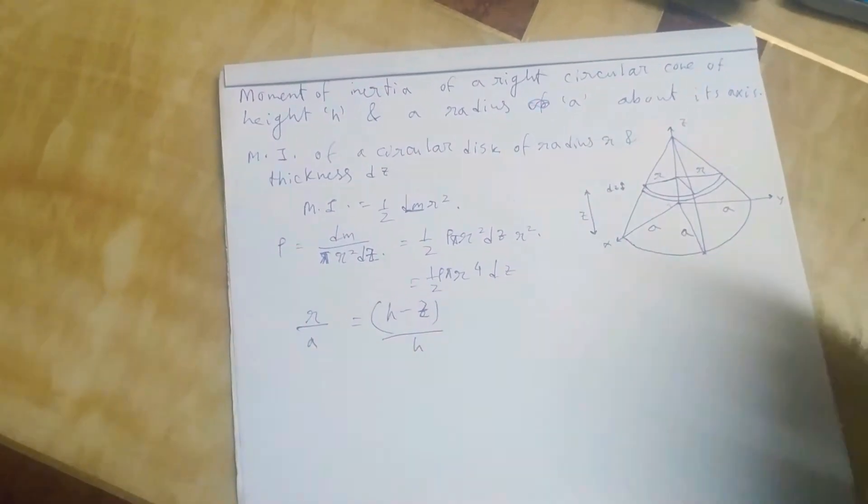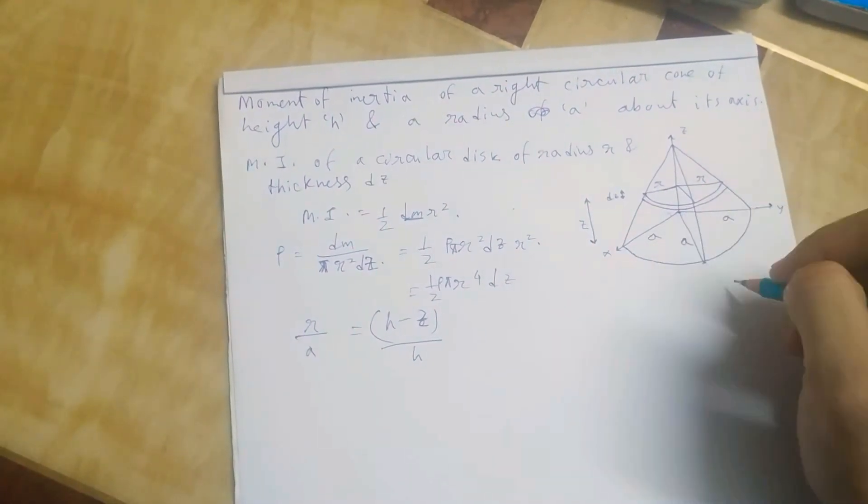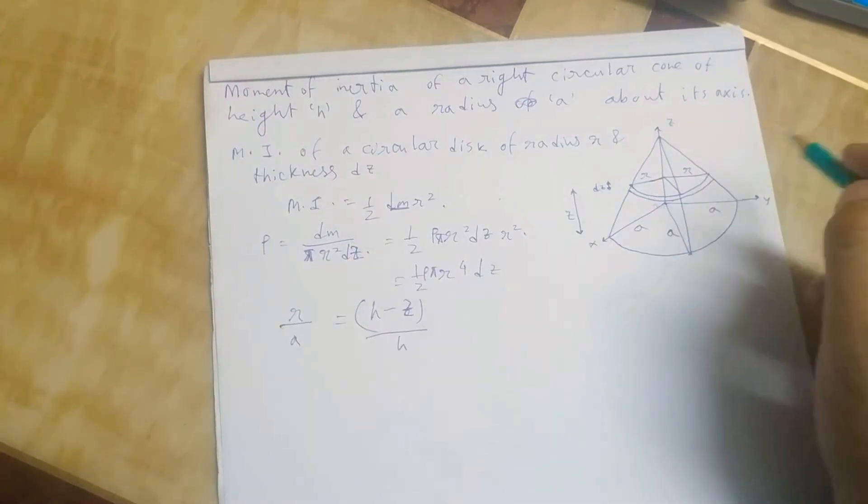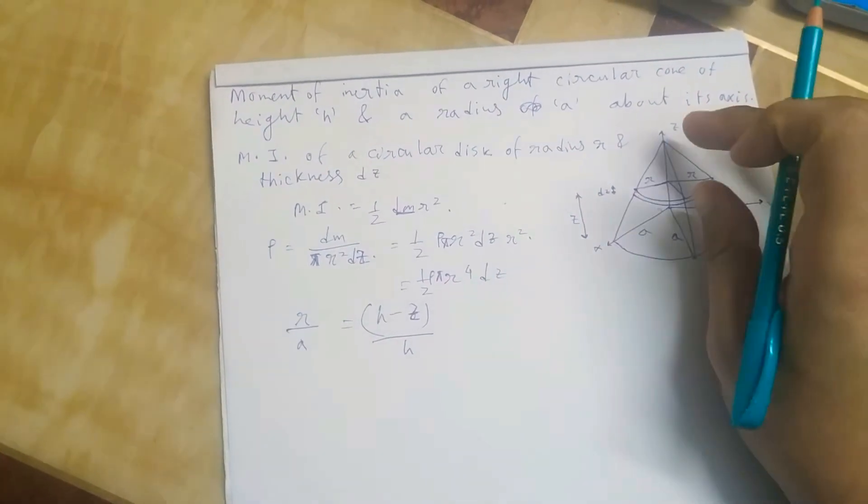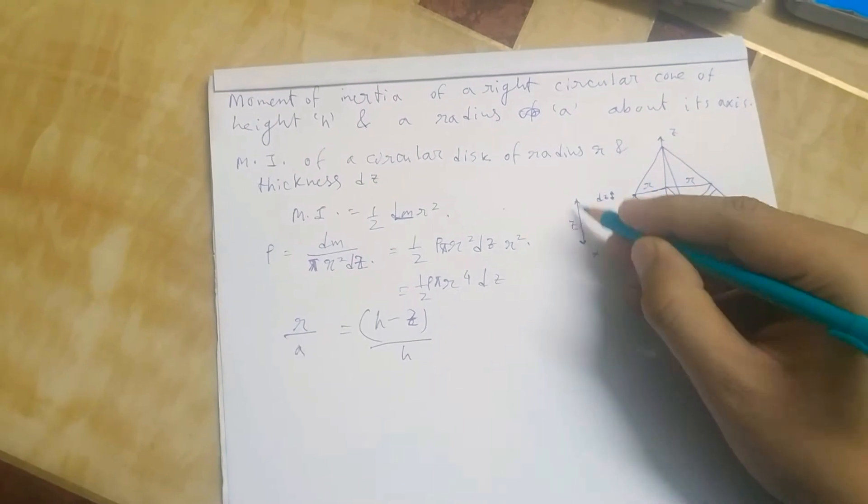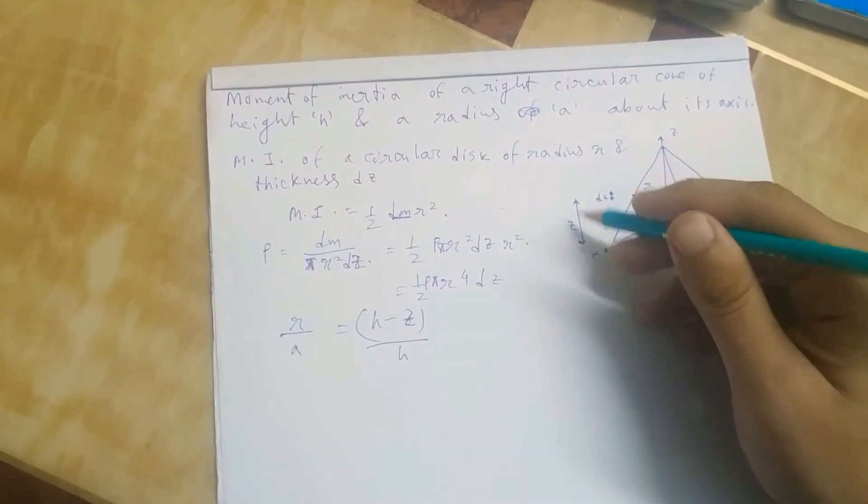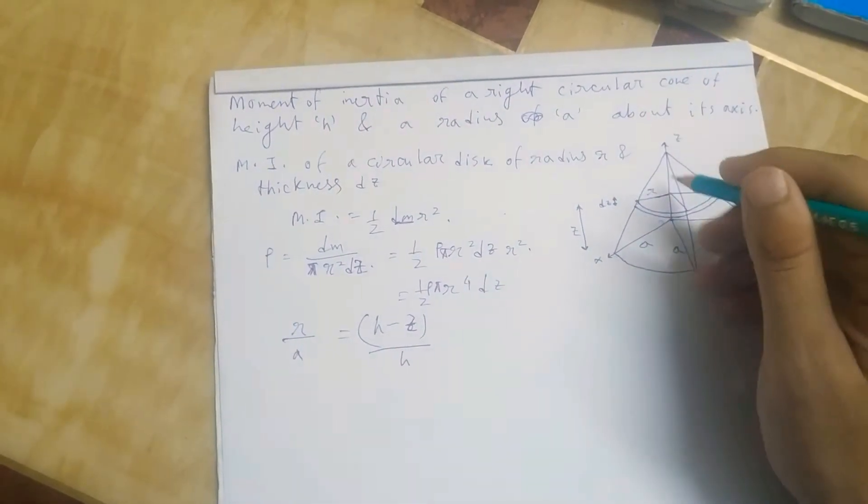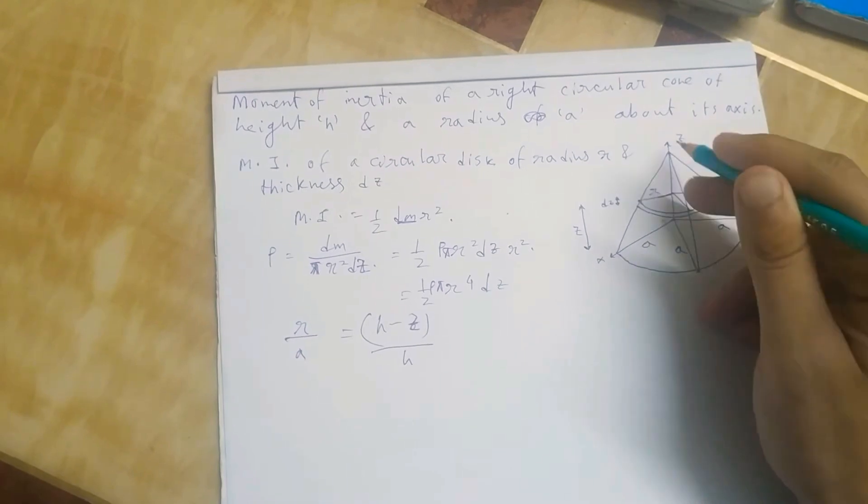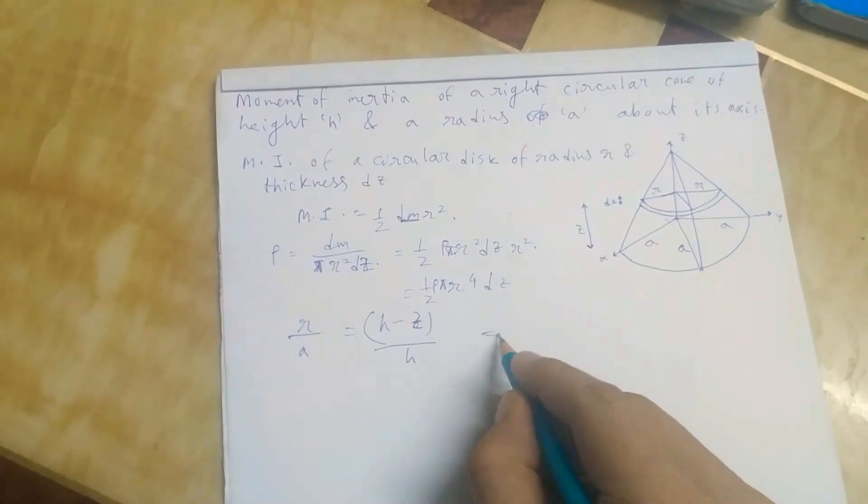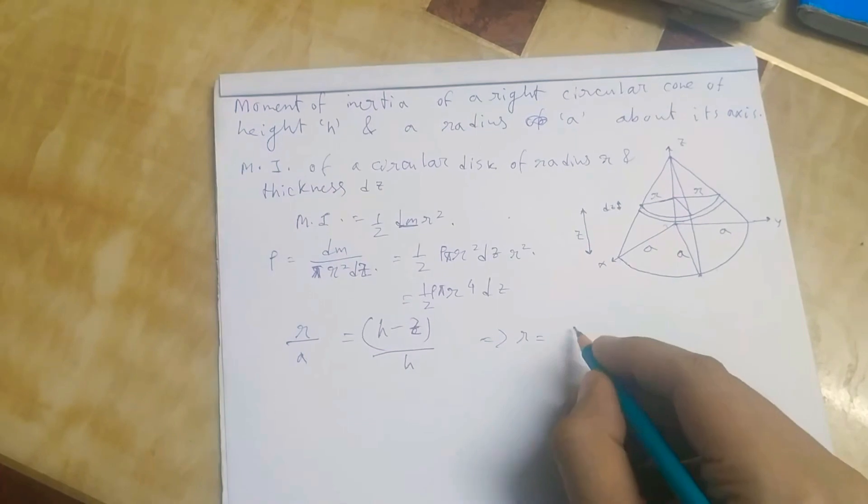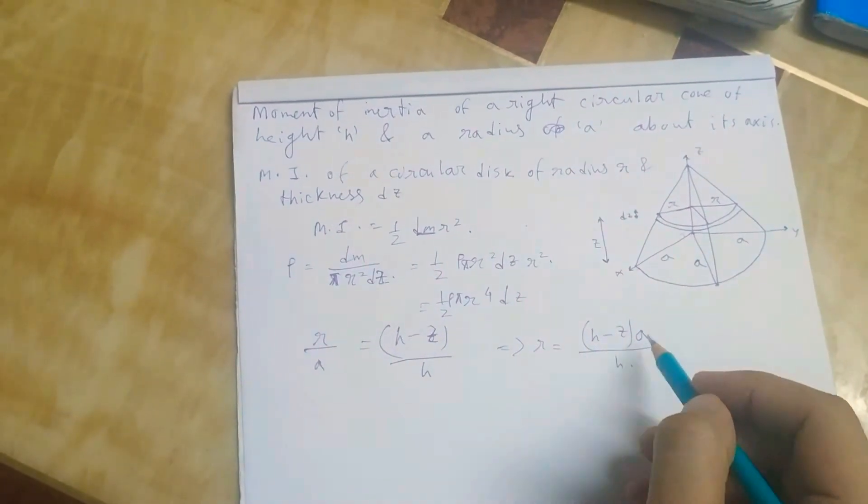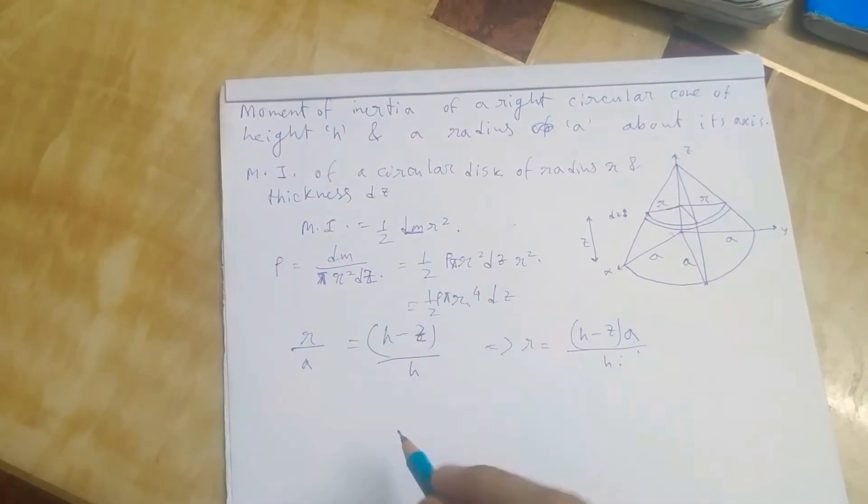Simple: r over a, a is the total radius, r is the radius of the disc. It will be equal to h minus z over h. This is the z value. I have taken this disk at a distance z from the base, so this is h minus z and h is the total length. From here we get r is equal to (h minus z) times a over h.